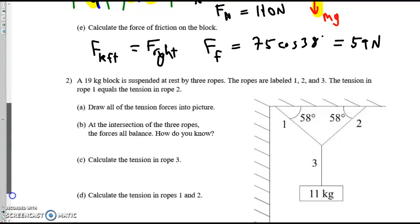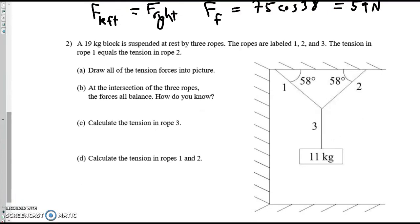On to the next one. A 19 kilogram block, except it's not. It's 11. The picture is correct. Is suspended at rest by three ropes. They are labeled. The tension in rope one equals the tension in rope two. And we know also that, well, this should be stated. We're going to use g equals 10.